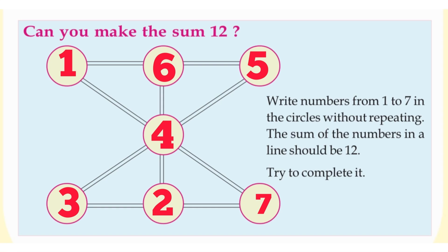And the cross line: 1 plus 4 plus 7 — 1 plus 4 is 5, and 5 plus 7 is 12. Also, 3 plus 4 is 7, and 7 plus 5 is 12. This is the answer.